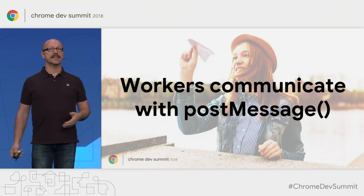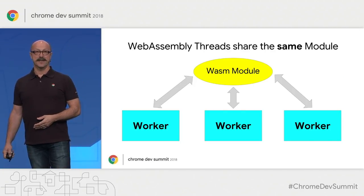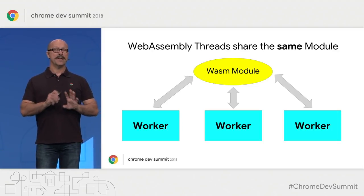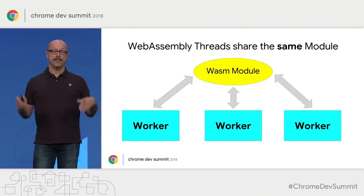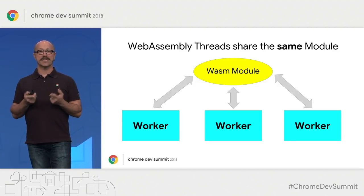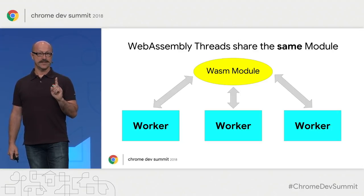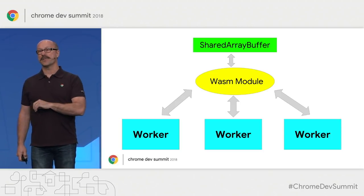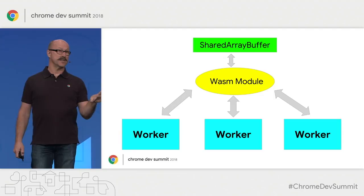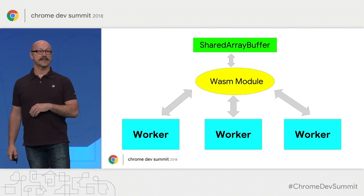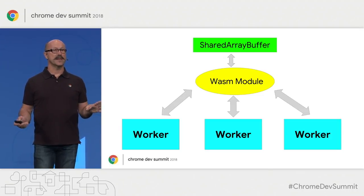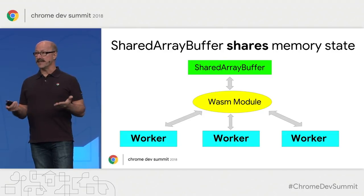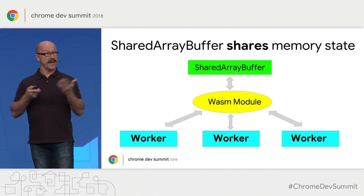When the team built WebAssembly threads, they implemented something that looks a lot more like this. Under the hood, we spin up web workers, but the difference is that the WebAssembly module is shared between the workers — so there's one copy of the code, consuming far less memory. More importantly, they share state through a thing called Shared Array Buffer. Shared Array Buffer is basically the same as a typed array, except it can be shared across workers. The state of the execution of the application is visible to any of the workers in parallel.